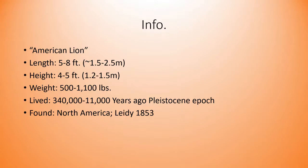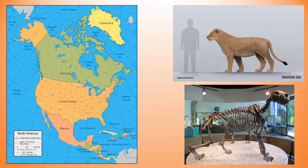The American lion lived 340,000 to 11,000 years ago in the Pleistocene epoch. The majority of the fossils are found in North America, all the way from Alaska to Mexico. There have been some American lion fossils found in South America. The person who described the American lion in a scientific paper was Joseph Leidy in 1853.